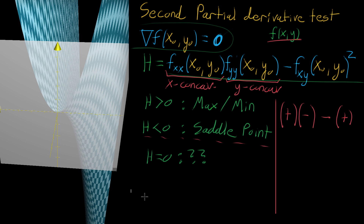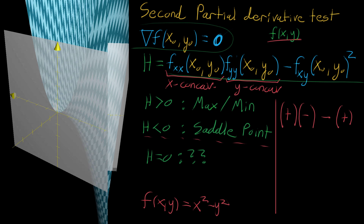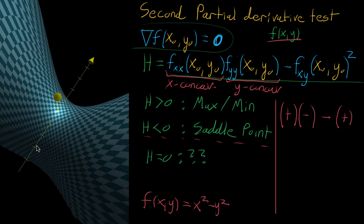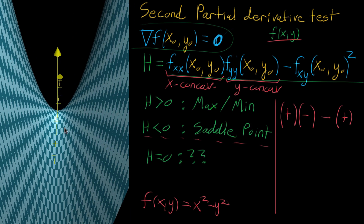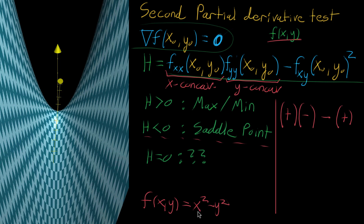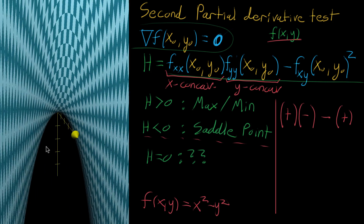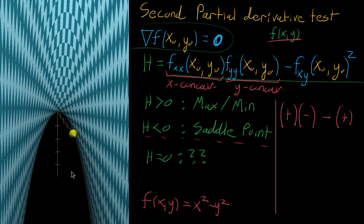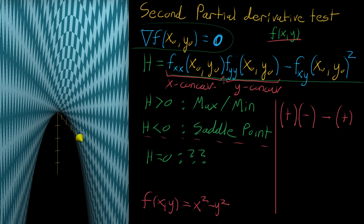The quintessential example is f(x, y) = x² − y². The graph looks like a saddle: moving in the x direction gives positive concavity, corresponding to the positive coefficient on x², and in the y direction it looks like negative concavity, corresponding to the negative coefficient on y². When there's disagreement like this, the test ensures we get a saddle point.